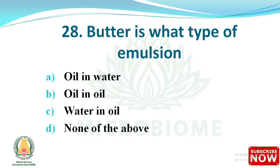Next question: butter is what type of emulsion? Options are: oil in water, oil in oil, water in oil, none of the above. The right answer is option C: water in oil. And milk is an oil in water emulsion.